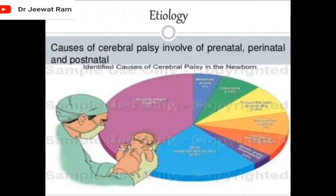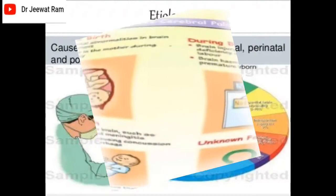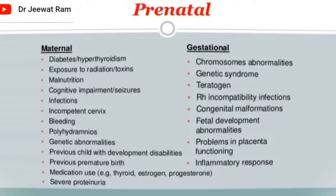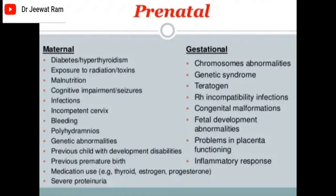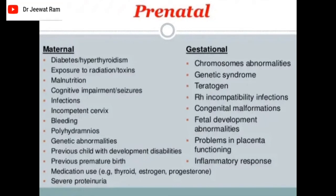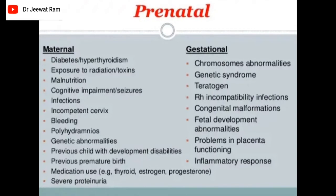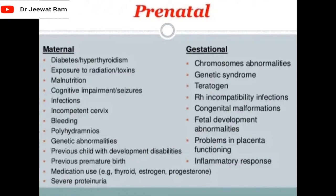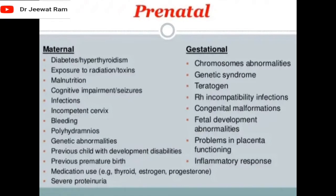Etiology — causes of cerebral palsy are prenatal, perinatal, and postnatal. Prenatal maternal causes include diabetes, hypothyroidism, exposure to radiation and toxins, malnutrition, cognitive impairment, seizures, infections, incompetent cervix, bleeding, polyhydramnios, genetic abnormalities, previous child with developmental disabilities, previous premature birth, medication use, and severe proteinuria.